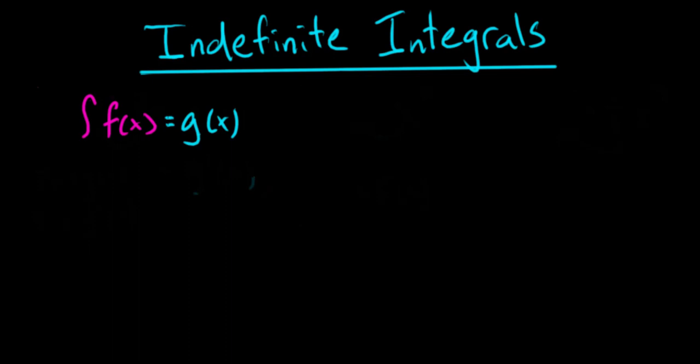What's the relationship here? How do we go from f of x to g of x? Well, integrals are simply the antiderivative. So we're taking the antiderivative of f of x and getting g of x. So if integrals are just the opposite of derivatives — we're kind of just working backwards — then that should mean that if we take the derivative of g of x, that should get us back to f of x.